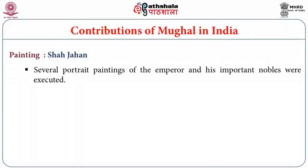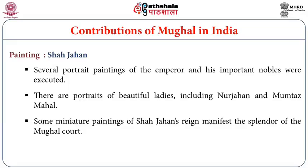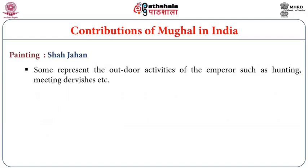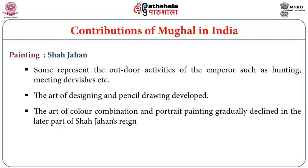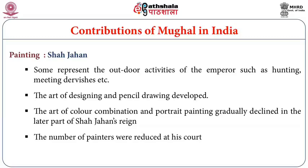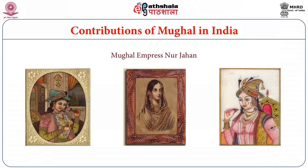Under Shah Jahan, several portrait paintings of the emperor and his nobles were executed, including portraits of Noor Jahan and Mumtaz Mahal. Some miniature paintings manifest the splendor of the Mughal court, while others depict outdoor activities such as hunting and meetings with dervishes. The art of designing and pencil drawing developed, though color combination and portrait painting gradually declined in the later part of Shah Jahan's reign, as he was more interested in architecture.